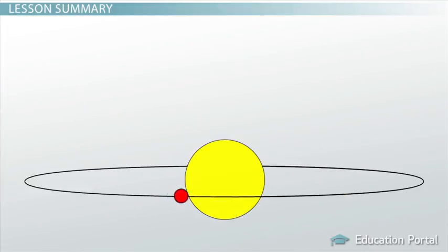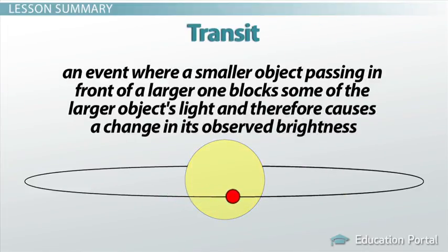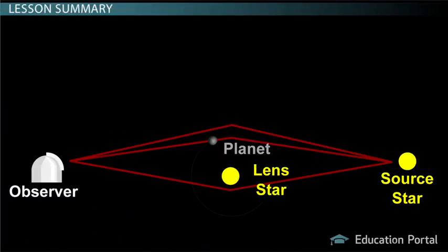If not through this method, then an extrasolar planet can be found by way of a transit, an event where a smaller object passing in front of a larger one blocks some of the larger object's light, and therefore causes a change in its observed brightness. In a smaller number of cases, microlensing has been used to detect an exoplanet.